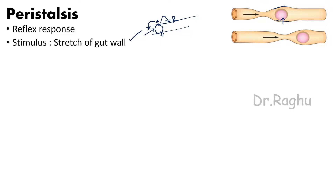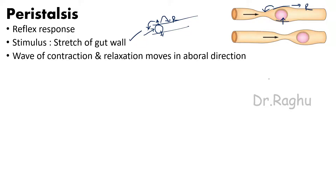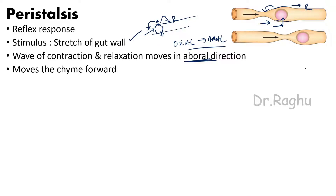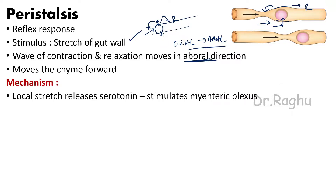When the wall is stretched, it initiates circular contraction behind the stimulus and relaxation in front of it. This creates a wave of contraction and relaxation always moving in the aboral direction — from oral to anal direction. This helps in moving the chyme forward.